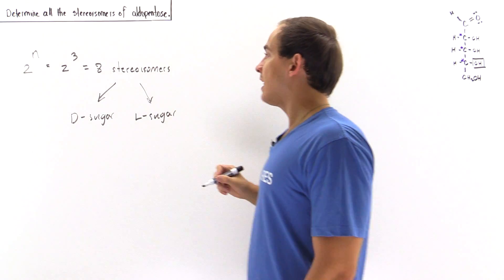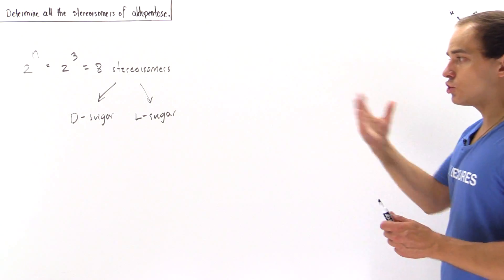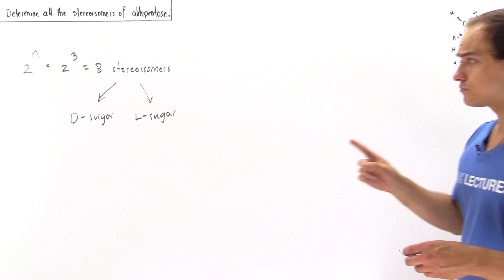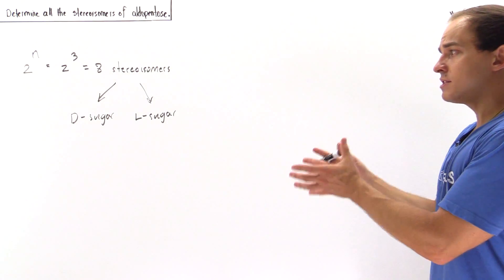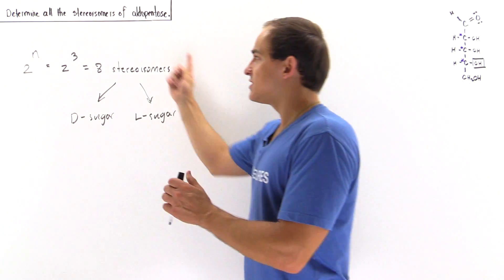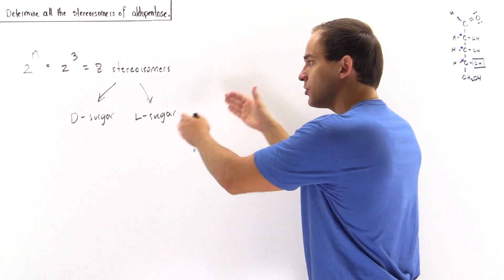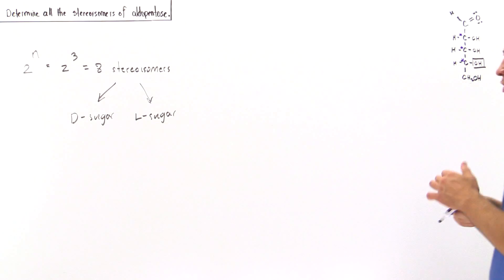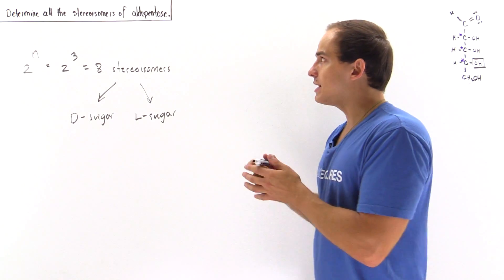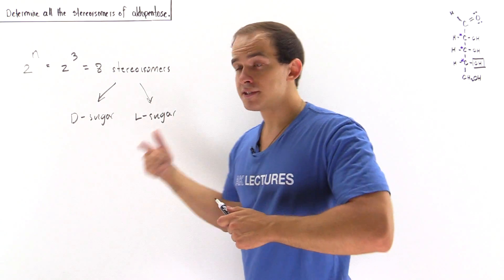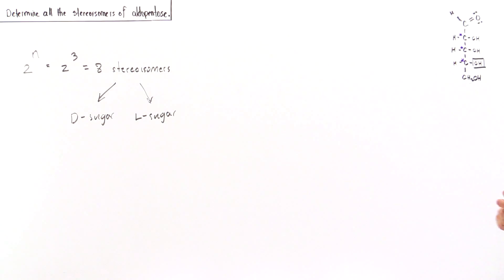Using the equation 2 to the power of N, where N is the number of stereogenic carbons, we get 2³ = 8 total stereoisomers of aldopentose. Four of these are the D-sugar and the other four are the L-sugar — four are D-aldopentose and four are L-aldopentose. This is always true: if there were 16 total, eight would be D and eight would be L.